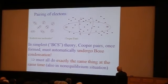Now, in the simplest theory of superconductivity, which is the BCS theory, after my colleagues Bardeen, Cooper and Schrieffer at the University of Illinois, they came up with this theory in the late fifties, these so-called large, huge diatomic molecules, if you like, the Cooper pairs, once they're formed, they must automatically undergo Bose condensation. And having undergone Bose condensation, they must all do exactly the same thing at the same time. And that's also true not just in equilibrium, but also in non-equilibrium situations.